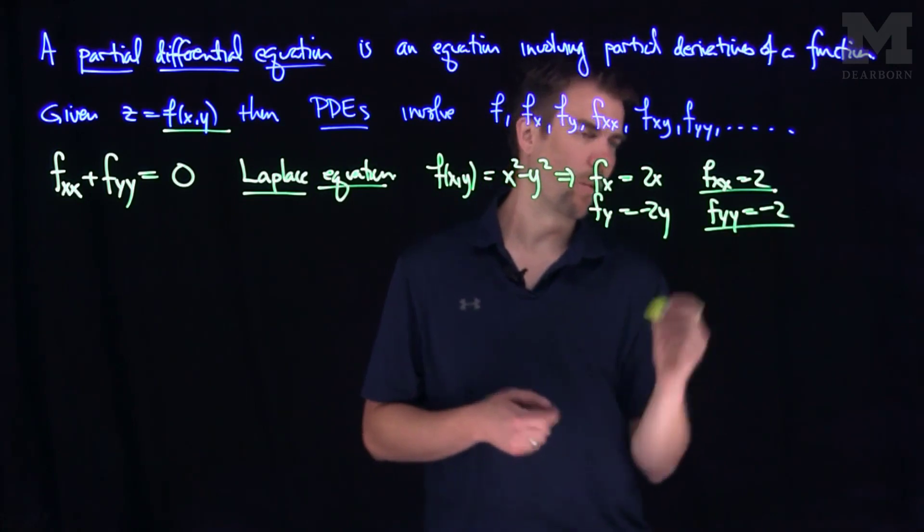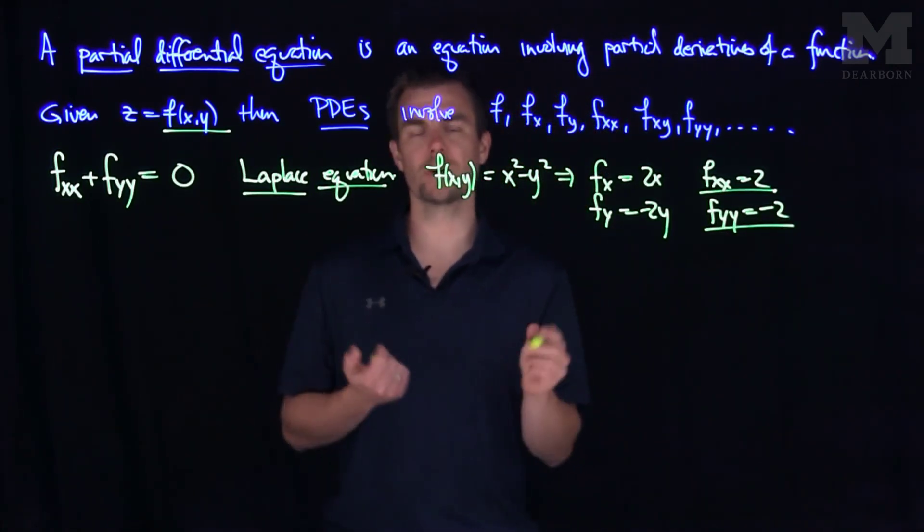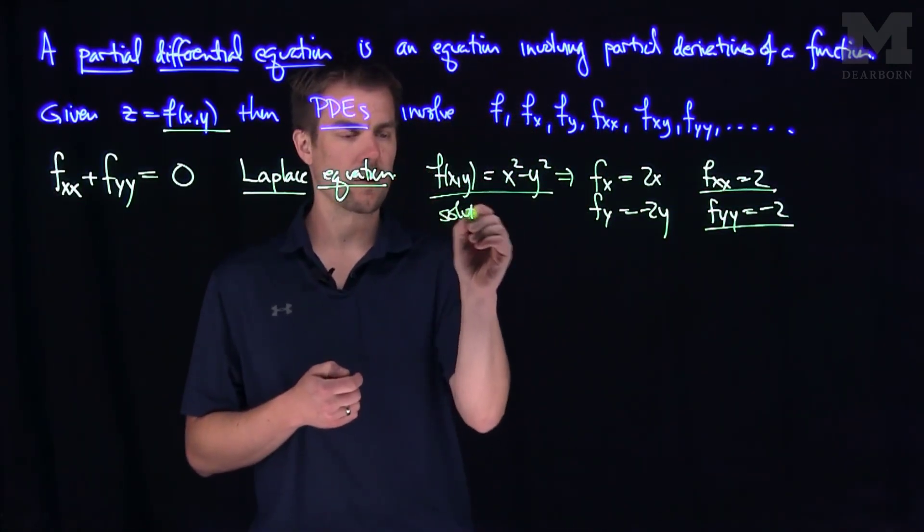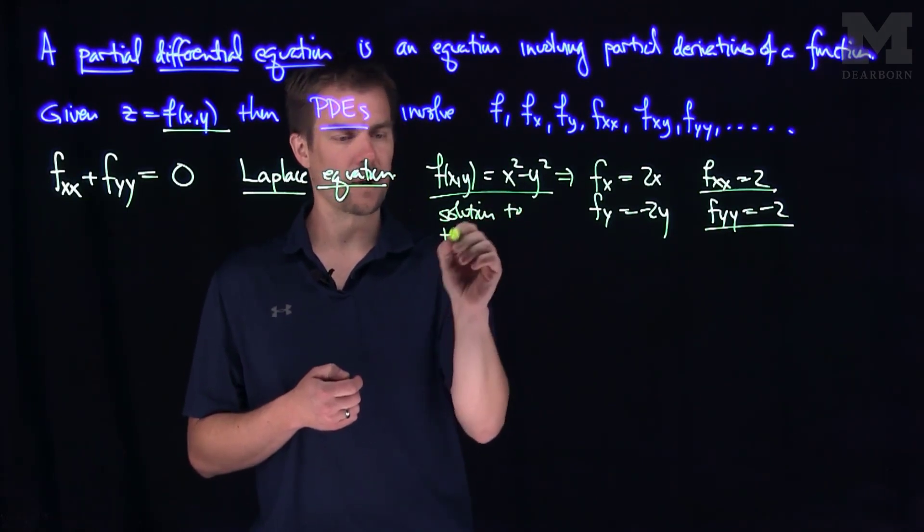If I add f-x-x to f-y-y, I get 2 plus negative 2, or zero. So, this function over here is a solution to the Laplace equation.